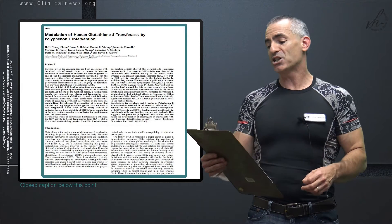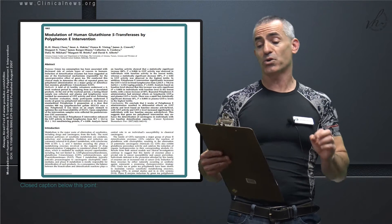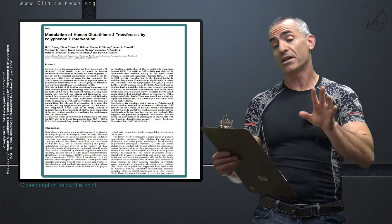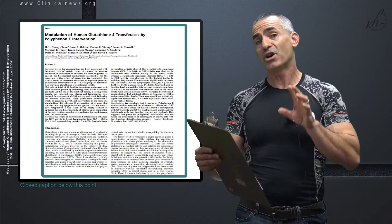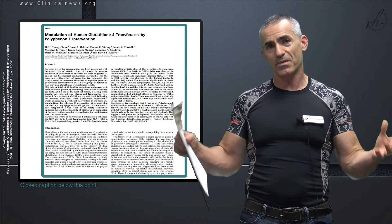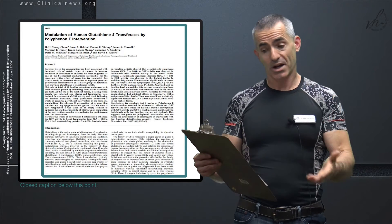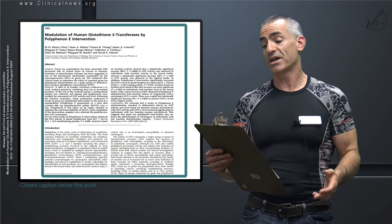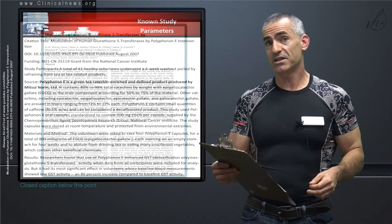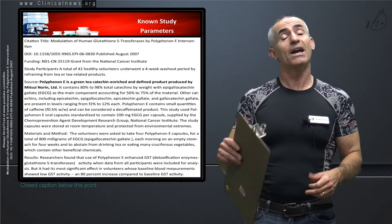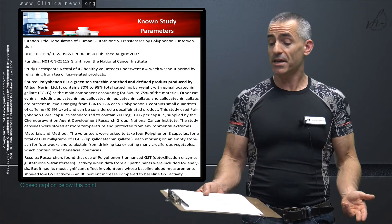Citation title, Modulation of human glutathione S transferases by polyphenol E intervention. Polyphenol E is basically the components or the type of green tea that's utilized for the study. And yes, it raised glutathione S transferases levels. DOI citation title, as follows. Funding National Cancer Institute.